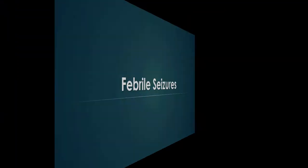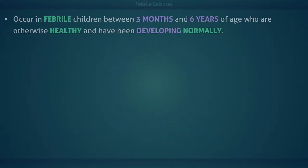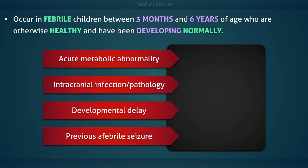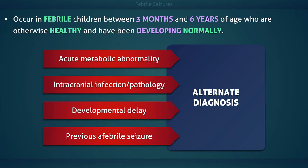Febrile seizures occur in febrile children between 3 months and 6 years of age who are otherwise healthy and have thus far been developing normally. By definition, there must not be any evidence of an acute metabolic abnormality or intracranial infection or pathology, and the child must have had a normal development without any prior unprovoked seizures. These findings would be indicative of an alternate diagnosis.